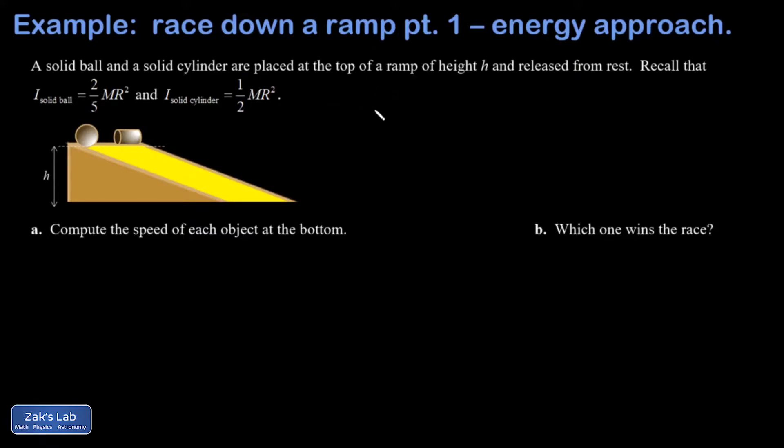I'm going to do prep work before getting into the actual final speed calculations. For each of these objects, their center of mass is going to drop by a height of H, so the gravitational potential energy change is MGH, or the initial is MGH and the final is zero.